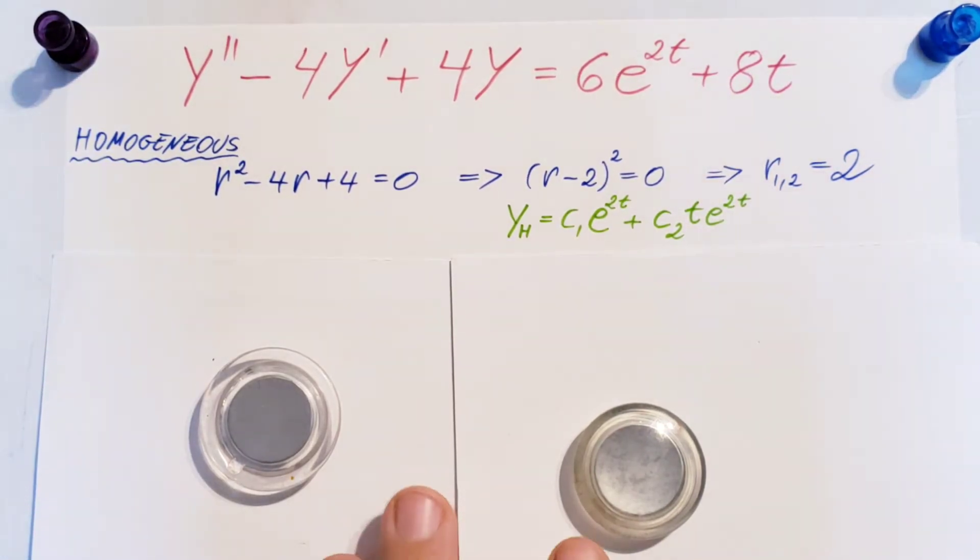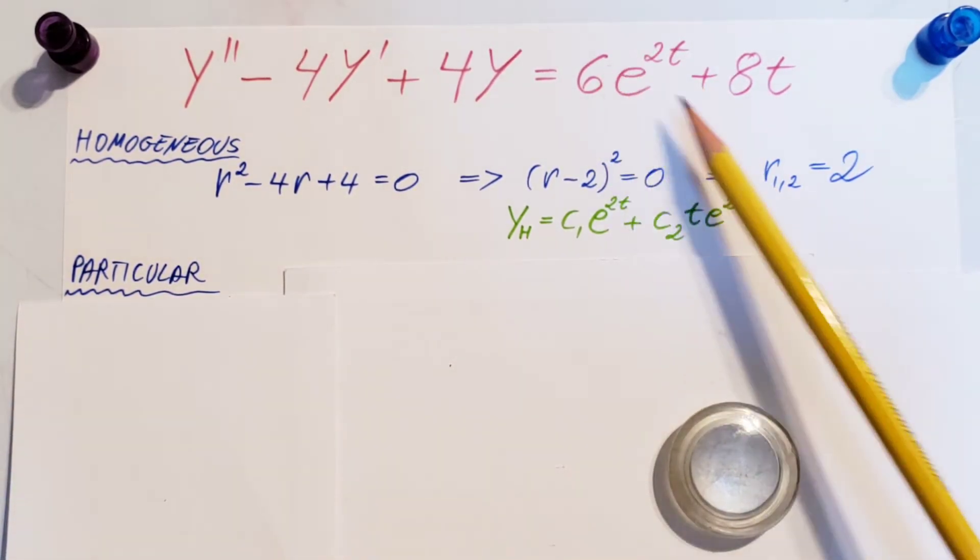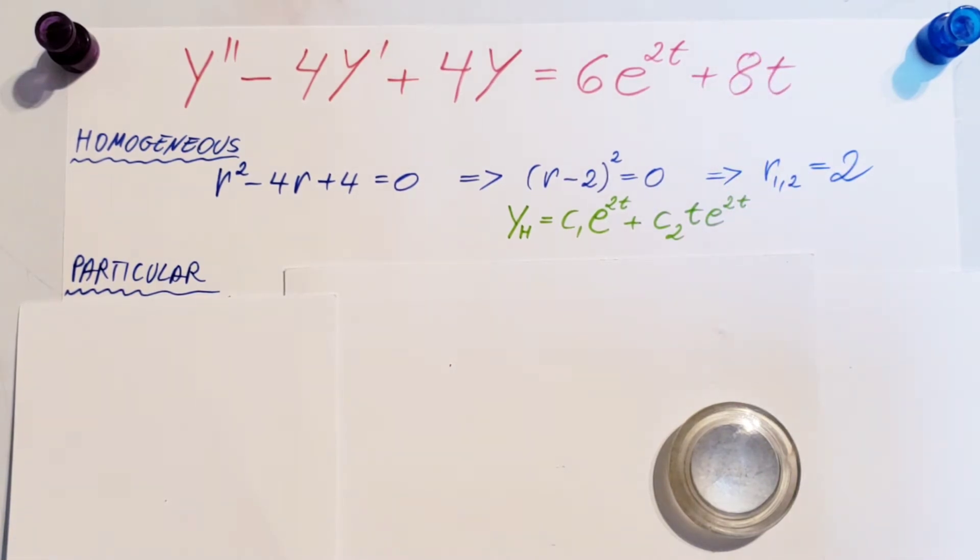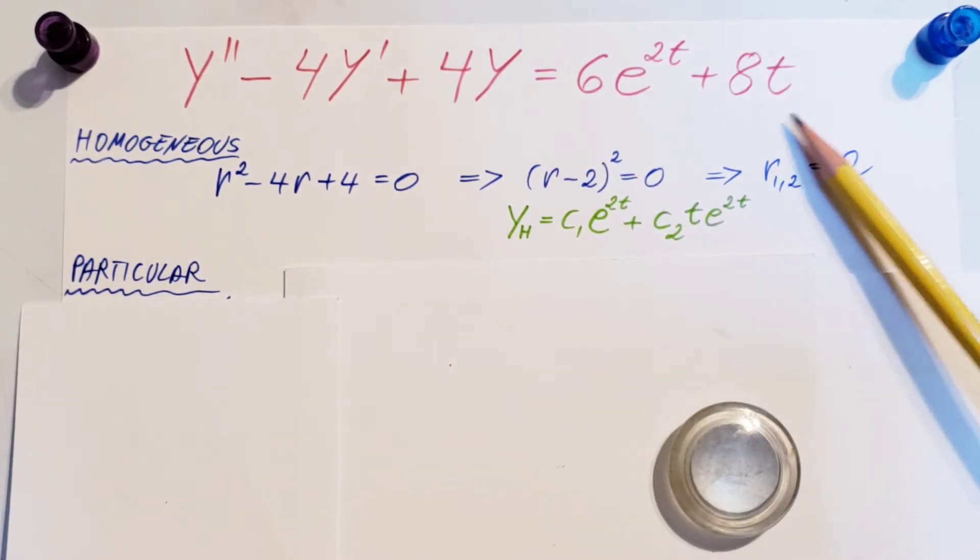Now, let's work on the particular solution. To find that, I'm going to use the undetermined coefficient method. That one calls us that we need to guess a solution for whatever we have on this side. We will have to guess a solution for this term, and then work on guessing a solution for this term.